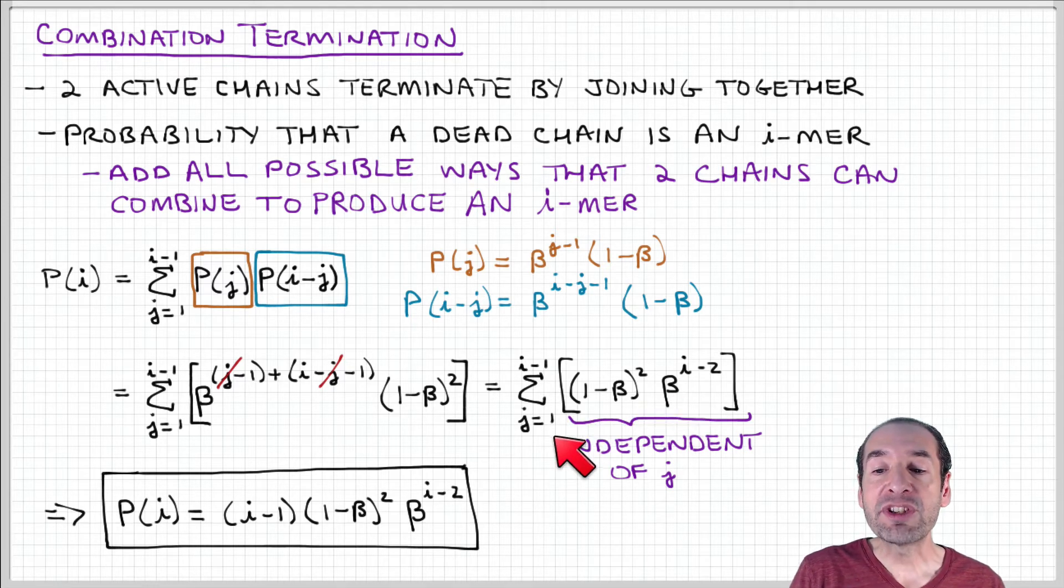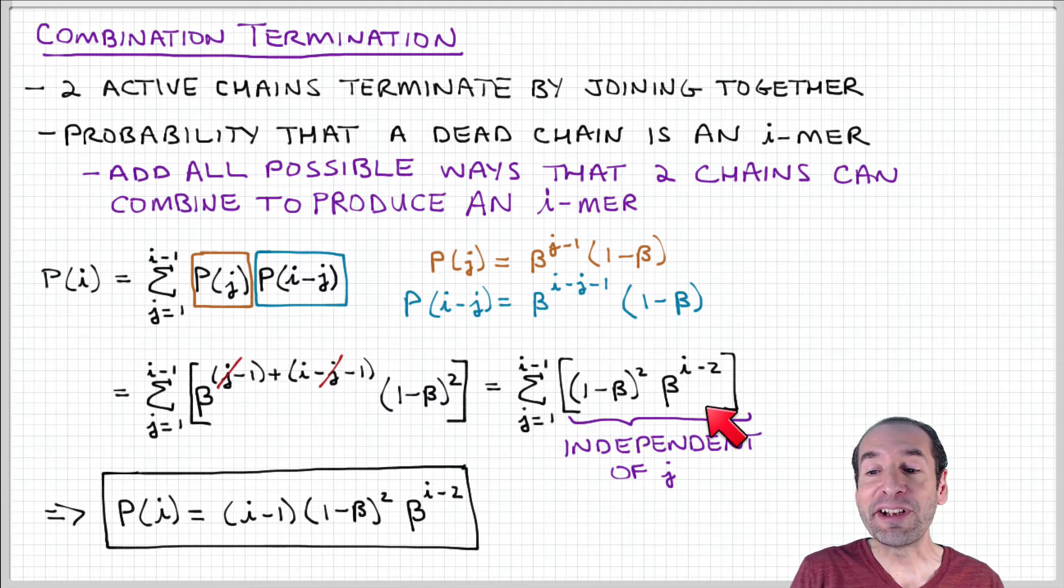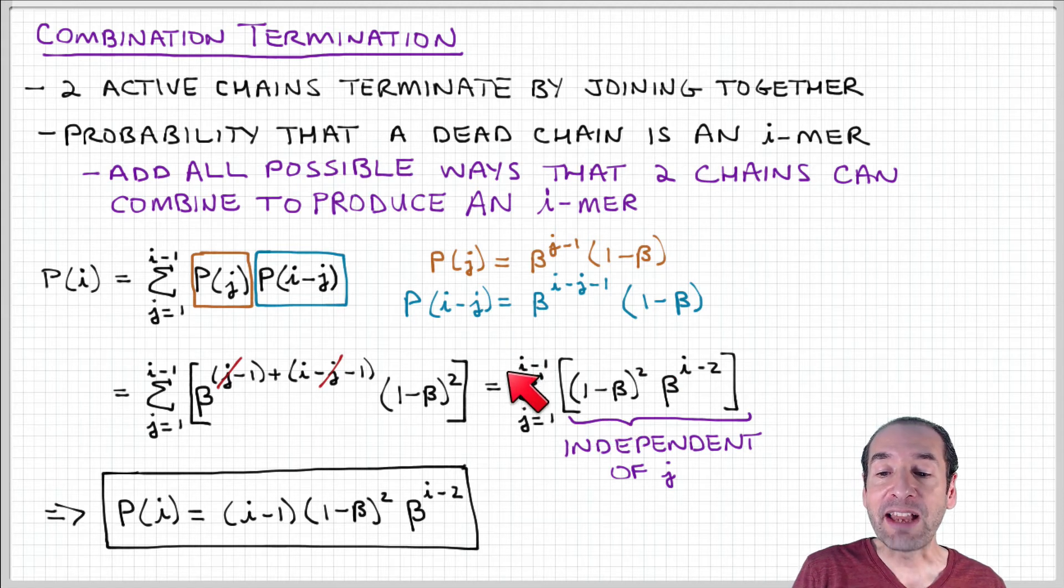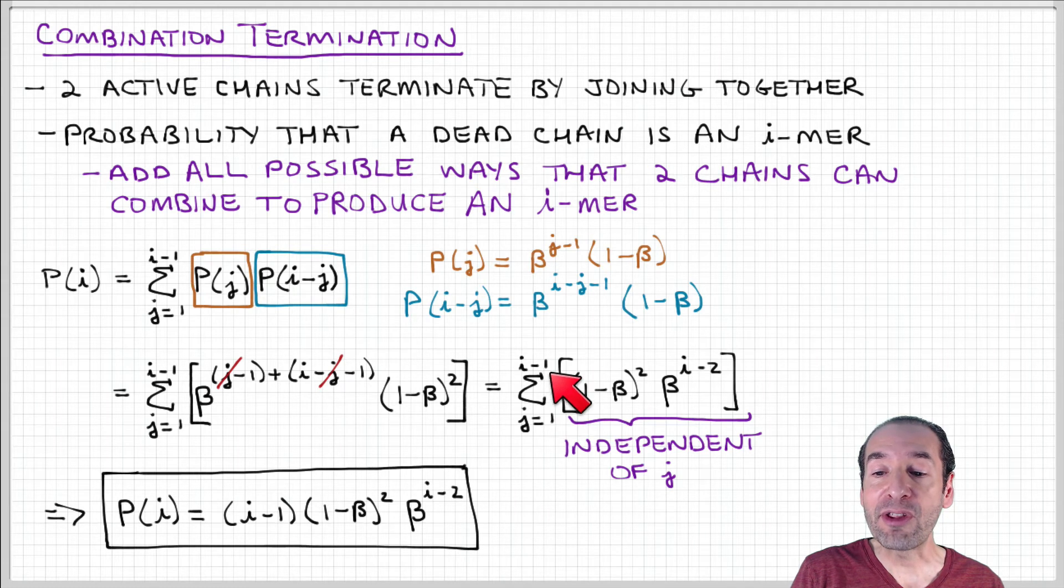So we end up with the sum of this term 1 minus beta quantity squared times beta to the i minus 2. But we're summing over j, so actually this is really easy to evaluate because this term is a constant with respect to j. We can just factor it out, and what we end up with is basically adding up of i minus 1 times this quantity.